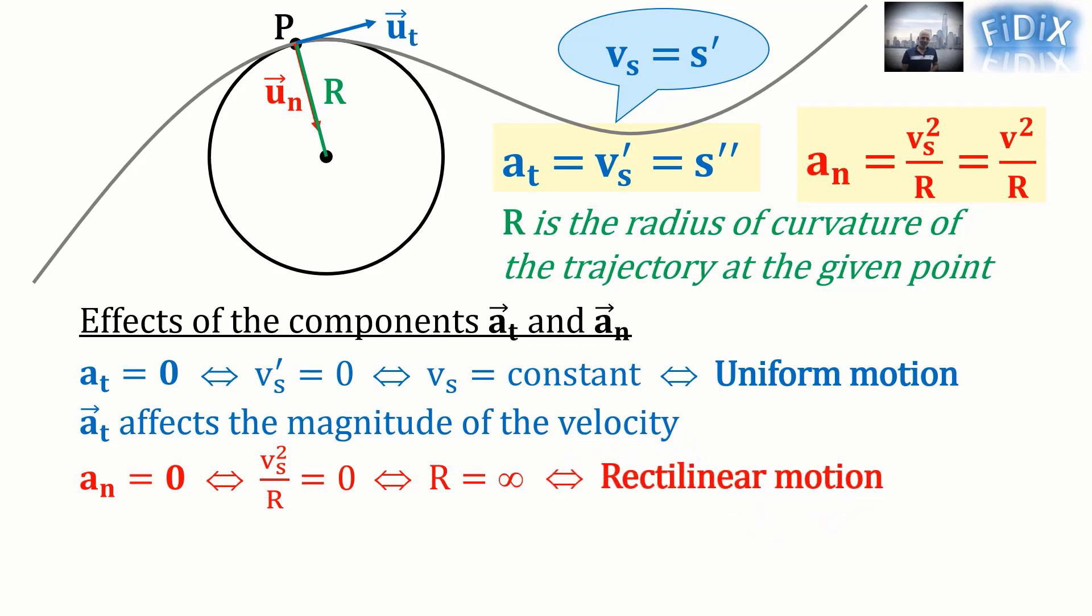Therefore, the motion is rectilinear. Thus, we can conclude that a_n affects the direction of the velocity.